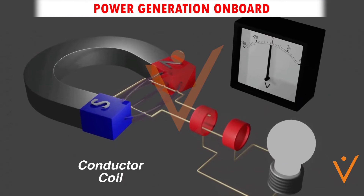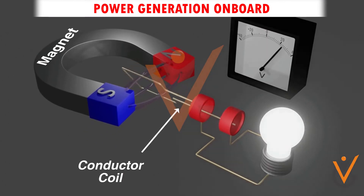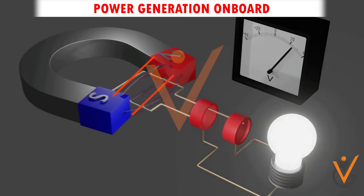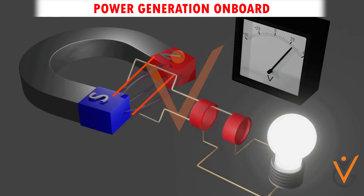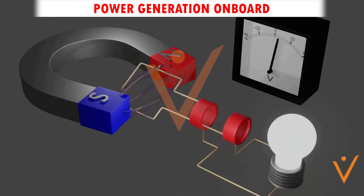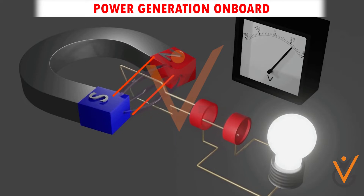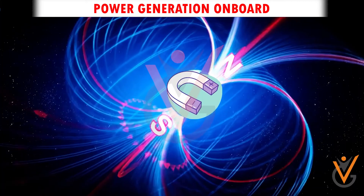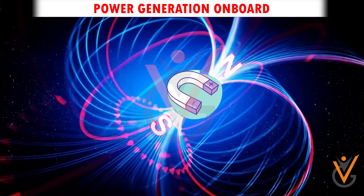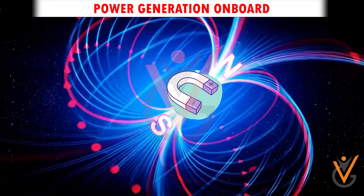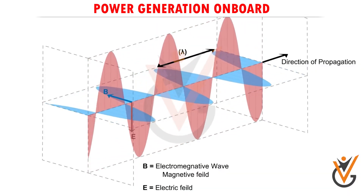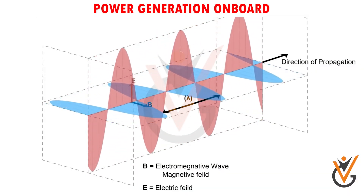Electric generators work on the principle of electromagnetic induction. A conductor coil, or copper coil, tightly wound onto a metal core is rotated rapidly between the poles of a horseshoe-type magnet. When the coil rotates, it cuts the magnetic field lying between the two poles of the magnet. The magnetic field interferes with the electrons in the conductor to induce the flow of electric current inside it — this is how electricity is generated.